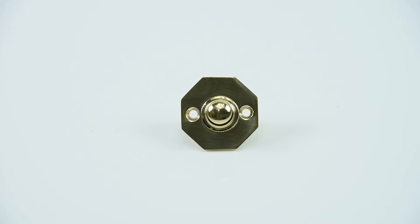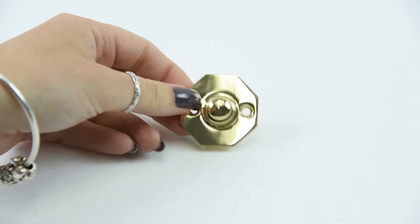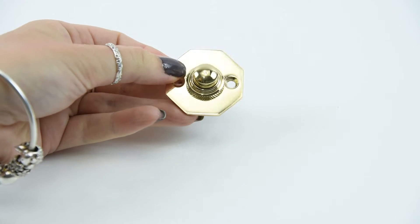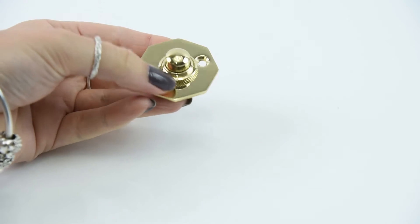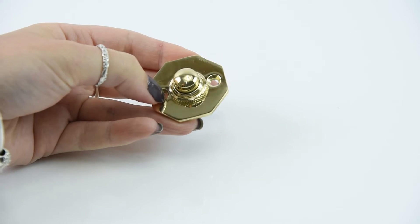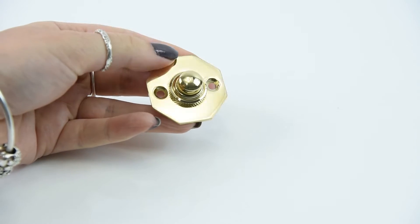So here we have the D3879 octagonal bell push. It's a lovely little product. It's designed and made by a foundry called Croft. Now all of Croft's products are British made and they're definitely a foundry that don't skimp out on quality.